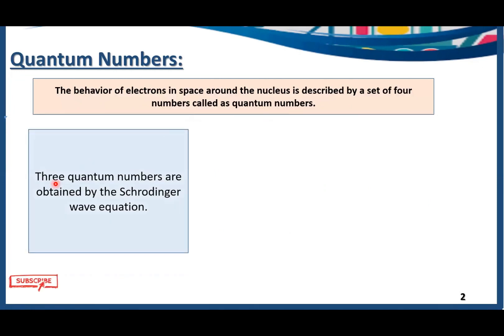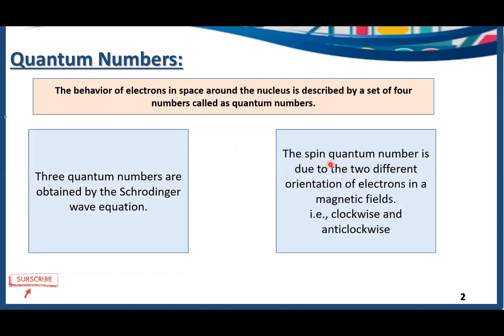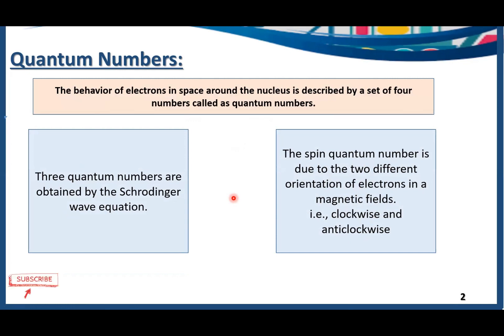Three quantum numbers are obtained by the Schrödinger wave equation, and the last quantum number — spin quantum number — is due to the two different orientations of electrons in a magnetic field: a clockwise direction and an anti-clockwise direction. So in total, we have four quantum numbers: three from the Schrödinger wave equation and the fourth from the magnetic field.